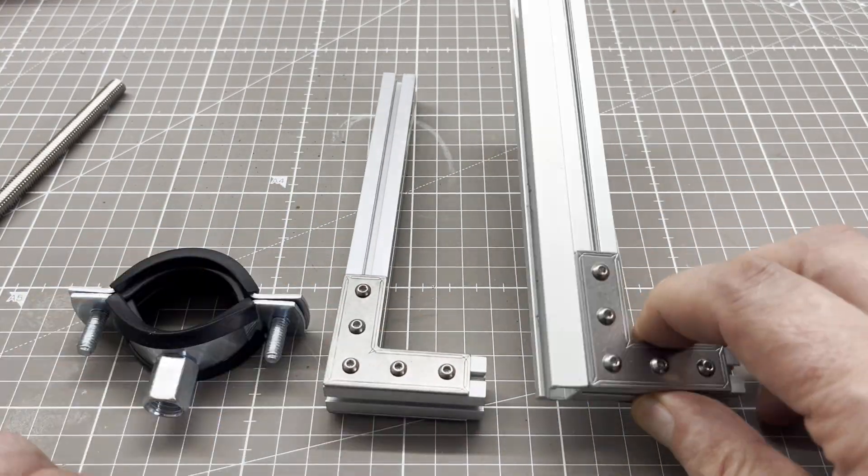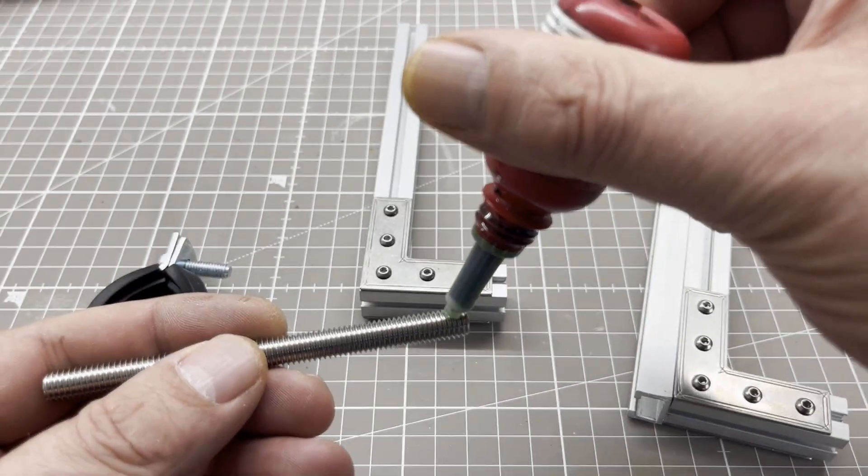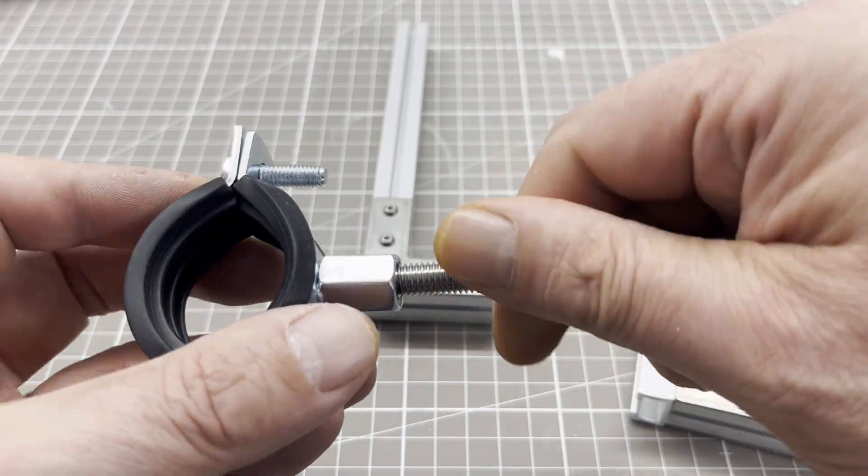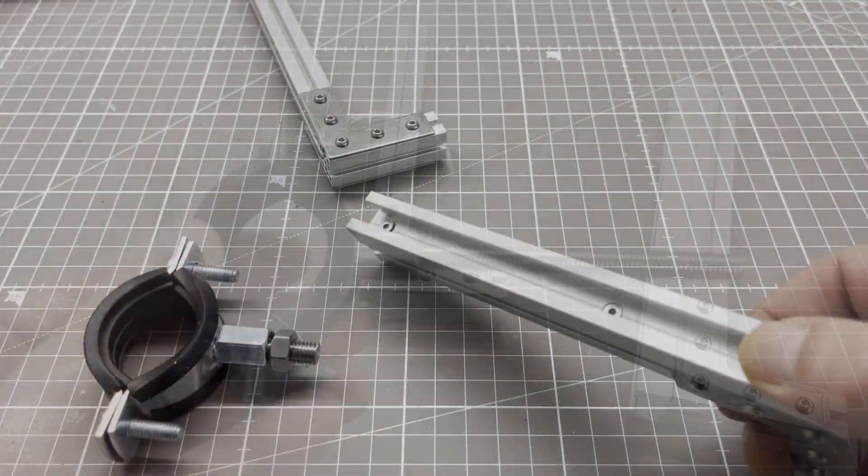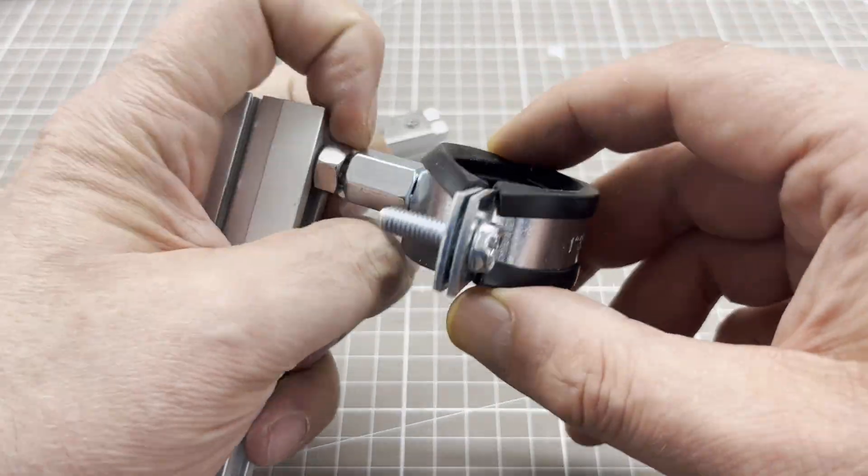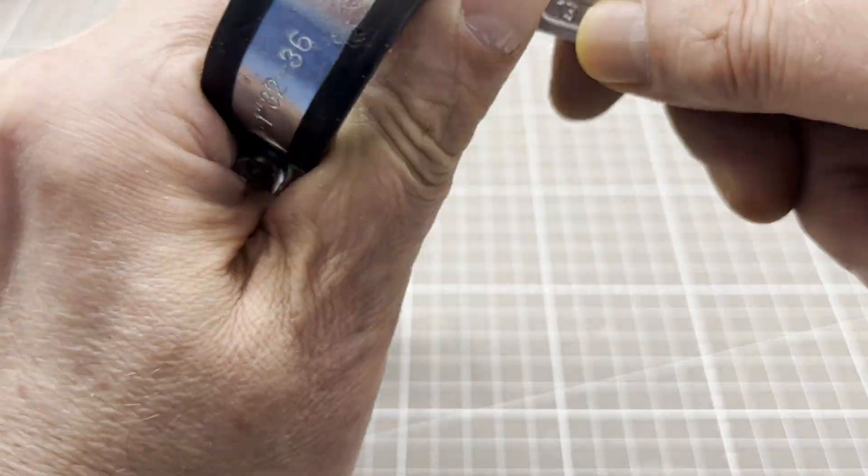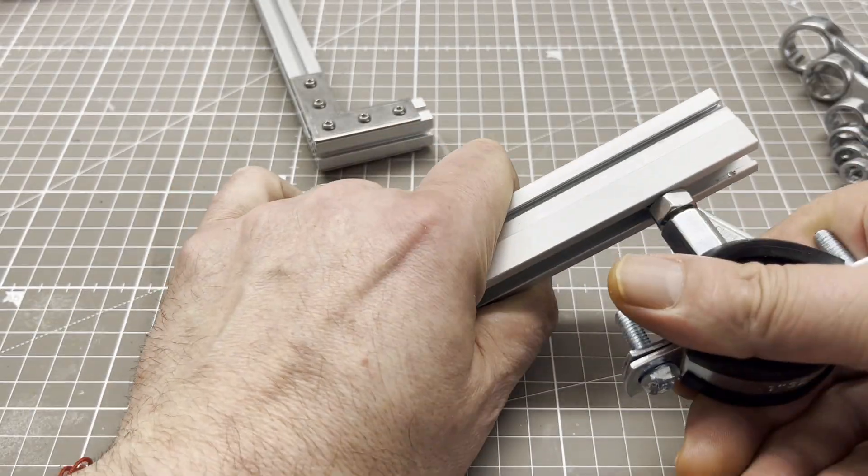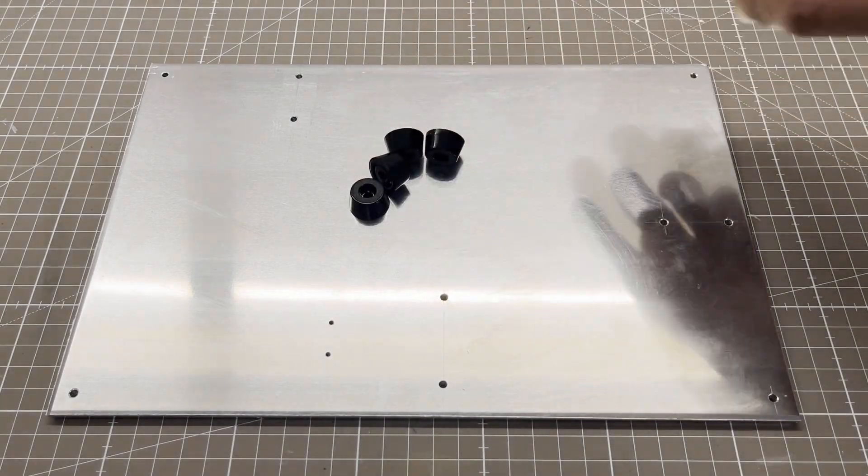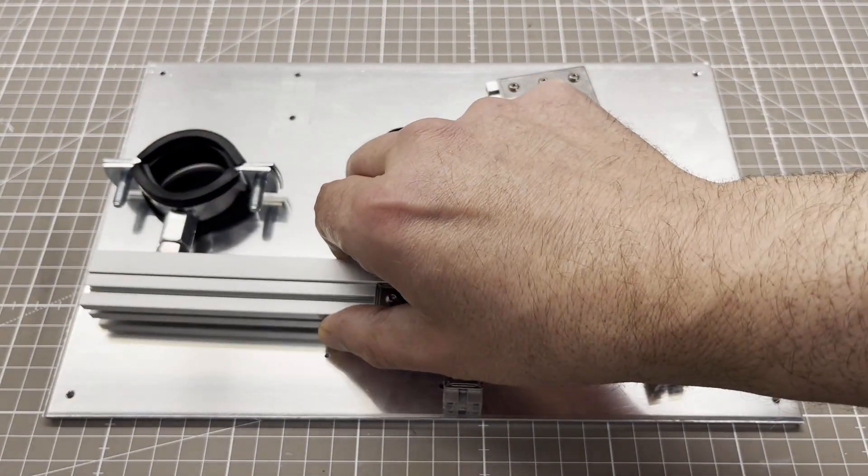First, I made two brackets from aluminum T-slot profiles. The pipe clamp is for the gas syringe, which I will get to later. This time I used an aluminum plate with a thickness of 5 mm instead of a kitchen board as a base plate.